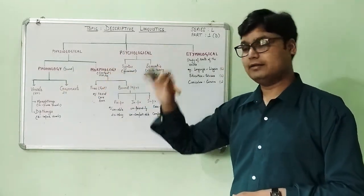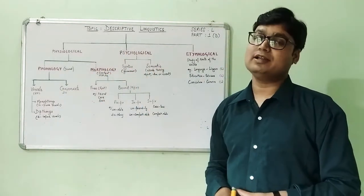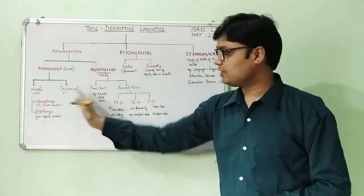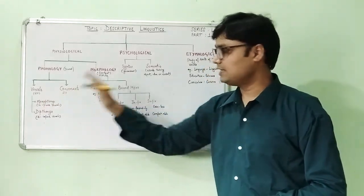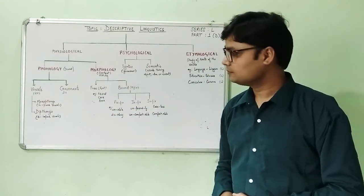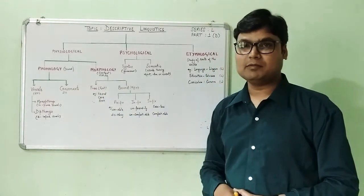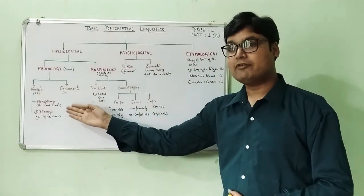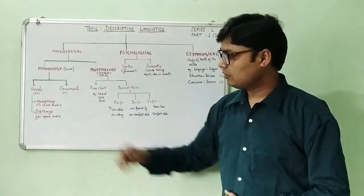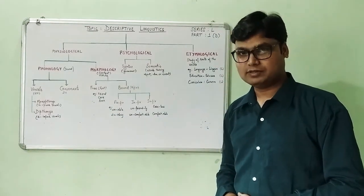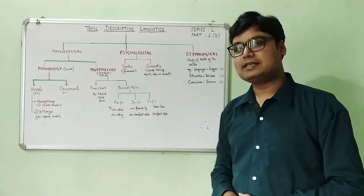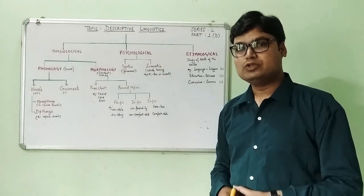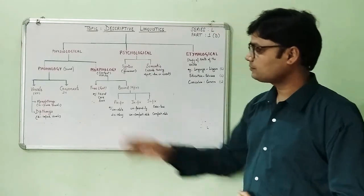The sound part is called phonology in which we study phonemes, and phonemes together are the combination of vowels and consonant sounds. Vowel sounds are twenty in number in which we have monophthongs and diphthongs. Monophthongs are twelve pure vowels while diphthongs are eight impure vowels. On the other hand, consonants are twenty-four in number which include two semi vowels.